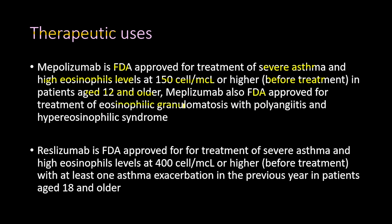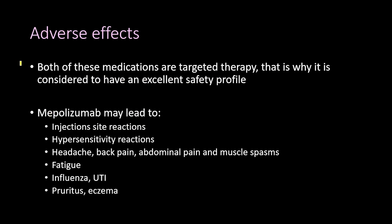Mepolizumab is also approved for treatment of hypereosinophilic syndrome. Reslizumab, on the other hand, is FDA-approved for treatment of severe asthma with eosinophil levels at 400 cells per microliter or greater before treatment, with at least one asthma exacerbation in the previous year, in patients aged 18 and older.